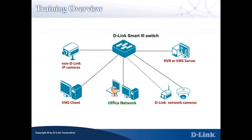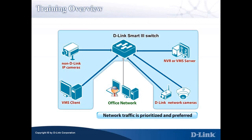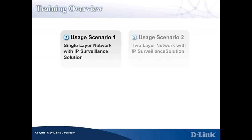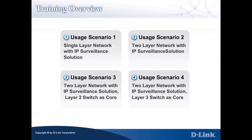D-Link Smart 3 switches can then have Auto Surveillance VLAN packets priority set as high as the traffic is transmitted over the network, so IP surveillance traffic is preferred over other non-prioritized network traffic. After understanding the operation of the Auto Surveillance VLAN, let's go in-depth for usage scenario deployment and configurations.